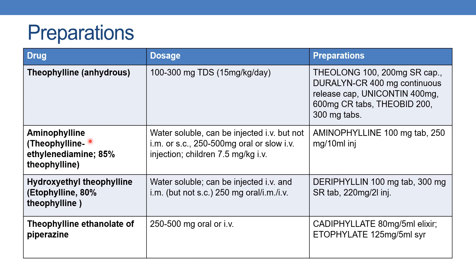The next drug is aminophylline, which is theophylline ethylene diamine and contains 85% of theophylline. It is water-soluble and can be injected intravenously but not intramuscularly or subcutaneously. The dosage is 250 to 500 mg oral or slow IV injection; children 7.5 mg per kg IV infusion. The preparation is Aminophyllin, available as 100 mg tablet and 250 mg per 10 ml injection.